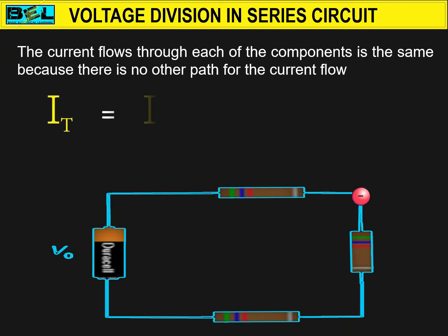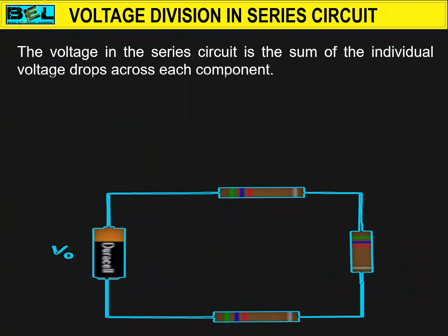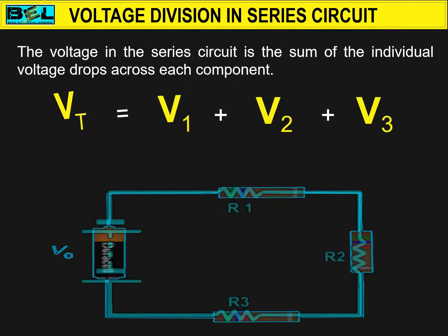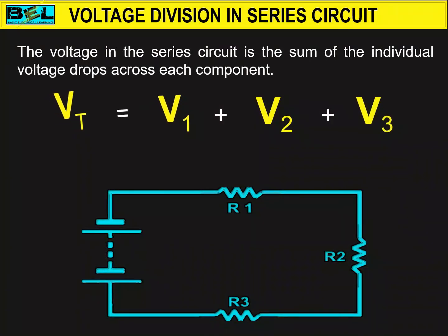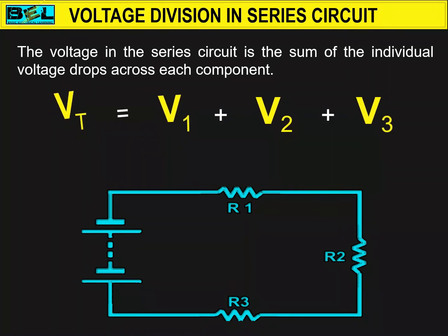This is the equation for the current in a series circuit: IT is equal to I1, is equal to I2, is equal to I3. Here IT is the total circuit current. The voltage in a series circuit is the sum of the individual voltage drops across each component. This equation is also known as Kirchhoff's voltage law.